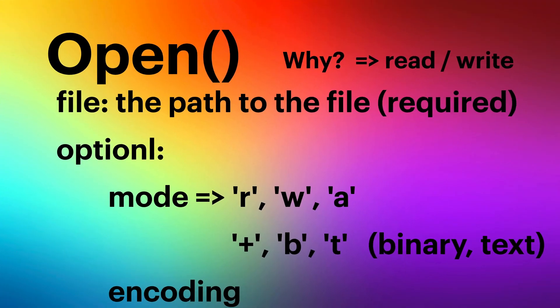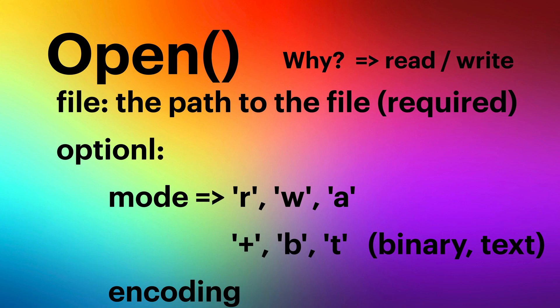There are several modes: the three main ones are read (`r`), write (`w`), and append (`a`). There are also optional modes: binary (`b`) and text (`t`). These modes are optional — if you don't define one, Python will default to read mode. However, it is always recommended to specify the mode explicitly, as it makes your code more readable and of better quality.